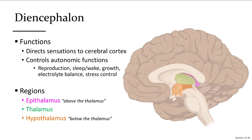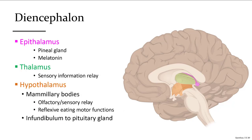The three main regions of the diencephalon are the thalamus — the main central portion — the epithalamus, meaning above, and the hypothalamus, meaning below the thalamus. The epithalamus is home to the pineal gland, the large bulbous portion pointing posteriorly, which secretes melatonin. The thalamus itself is a sensory relay station sending impulses up into the cerebrum.